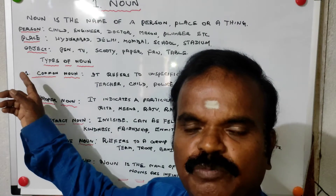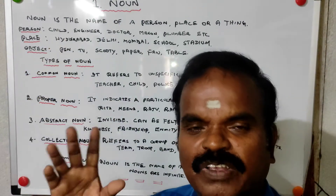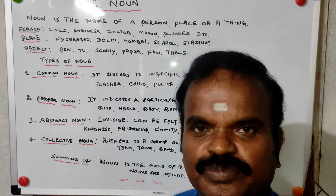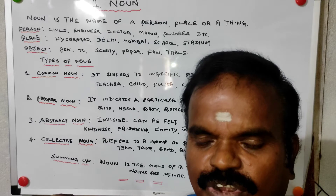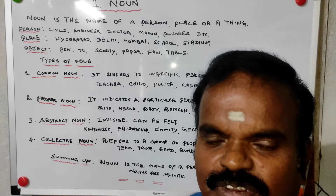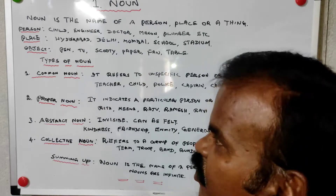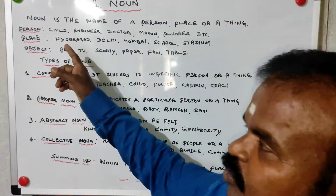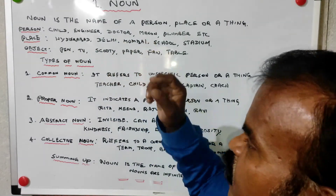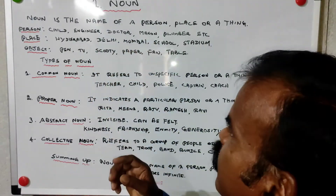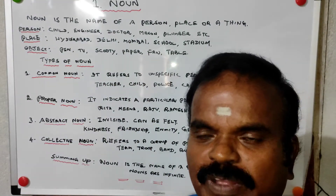Noun is the name of a person — any person. For example: teacher, engineer, collector, doctor, police, child, mason, plumber. You can go on endlessly writing the names of persons.